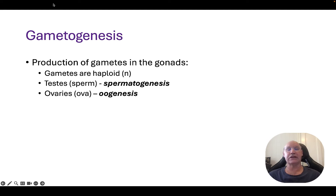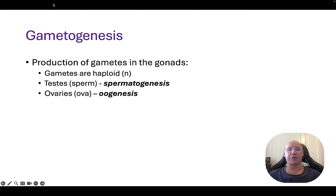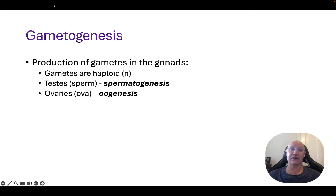Gametogenesis is the production of gametes and that occurs in the gonads. In males that's the testes and in females that's the ovaries. Males produce sperm in a process called spermatogenesis, and the ovaries produce ova in a process called oogenesis. Don't forget that the gametes — the sex cells — are haploid.